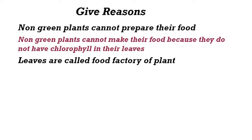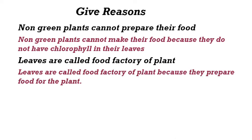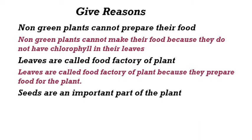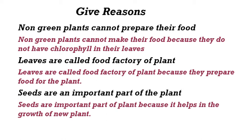Why are leaves called the food factory of plant? Leaves are called the food factory of plant because they prepare food for the plant. (Pattiyaan paudhon ki khana factory isliye kahlati hain kyunki wo paudhon ke liye bhojan taiyar karti hain.) Why are seeds an important part of the plant? Seeds are an important part of plant because they help in the growth of new plants. (Beej paudhe ka ek mahatvapurn hissa hai kyunki ye naye paudhe ke vikas mein madad karte hain.)